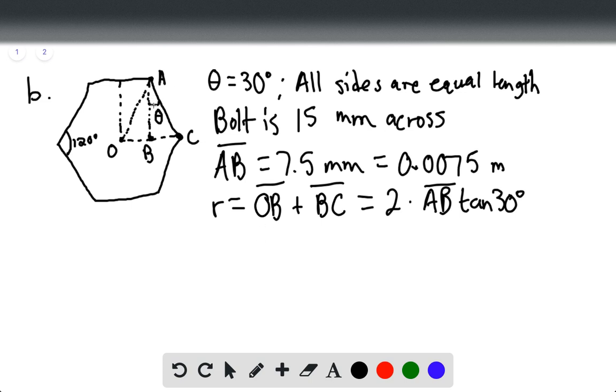So tan of 30 would be opposite, which would be opposite here, and then over adjacent. So BC would equal, essentially, AB times tan of 30 degrees, and OB, because OB is equal to BC, that would also equal AB tan of 30 degrees.